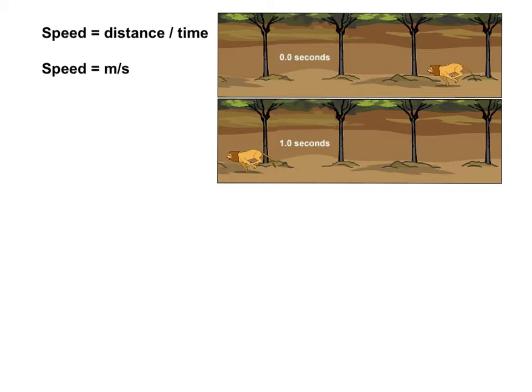First, we've been using this gizmo on explorelearning.com called measuring motion, and you film animals as they cruise across the African savanna. In this particular case, we see a lion cruising across and passing some trees.